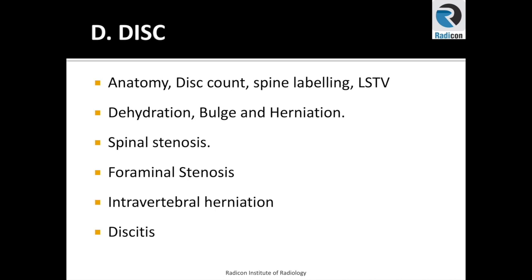We will also see spectrum of disc disease such as disc dehydration, disc bulge, disc herniation and relevant nomenclature. Once the disc has herniated, we need to review its effects on the thecal sac and surroundings including nerve root exit foramina. Not to forget that discs do not herniate only to the thecal sac but also can cause herniation into vertebral bodies resulting in Schmorl's nodes. Lastly, disc infection and discitis and its imaging points.